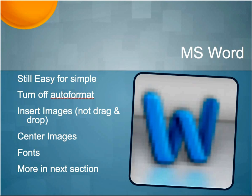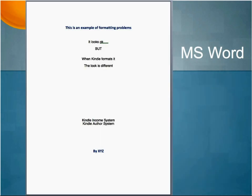Fonts — we talked a little bit about web-safe fonts, so keep that in mind. Here's an example of a formatting problem: it looks fine and gives you just the basics of what you need — a title, author information, and so on. One of the issues, though, is that when uploading an MS Word document to Kindle, it converts that into a different format, and so what you see is not always what you get.